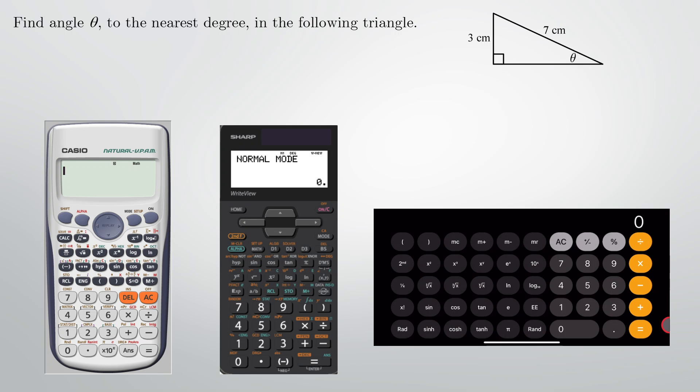In this video we're going to take a look at how to find an angle using the primary trigonometric ratios, that is sine, cosine, and tangent, with a calculator.